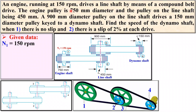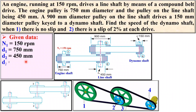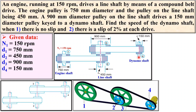Let us list out the given data. An engine running at 150 rpm, so N1 = 150 rpm. The engine pulley diameter D1 = 750 mm. The pulley on the line shaft D2 = 450 mm. The 900 mm diameter pulley on the line shaft gives D3 = 900 mm. The 150 mm diameter pulley on the dynamo shaft gives D4 = 150 mm. Find the speed of the dynamo shaft, meaning N4 = ?